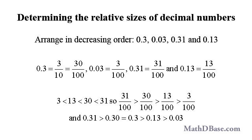Since 3 is less than 13, which is less than 30, which is also less than 31, in order of decreasing value, we have 31 over 100, 30 over 100, 13 over 100, and 3 over 100. So 0.31 is larger than 0.3, which is larger than 0.13, which is larger than 0.03.